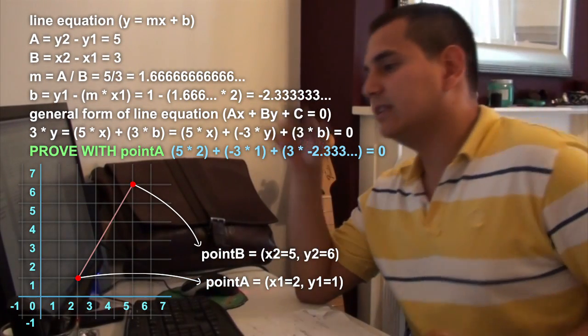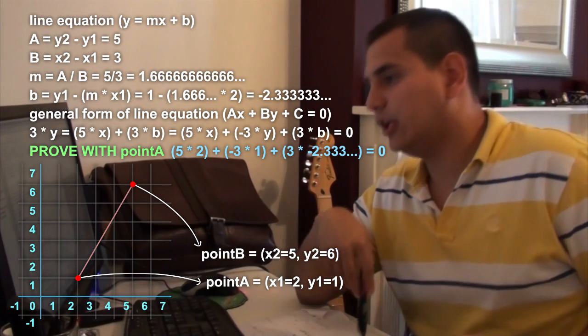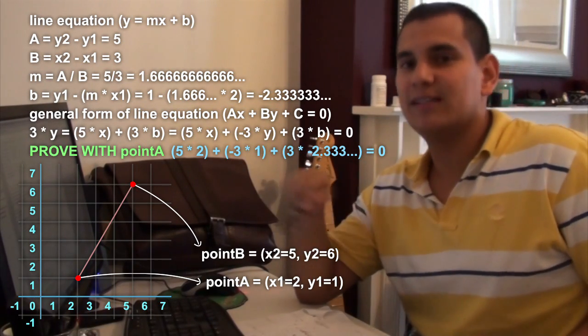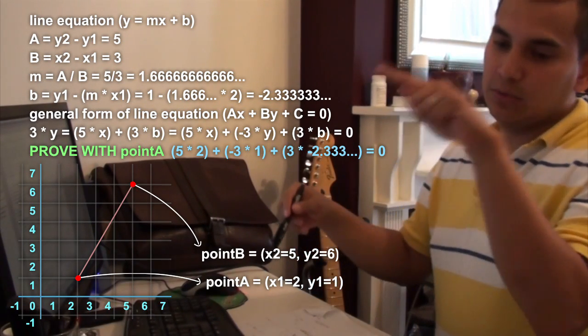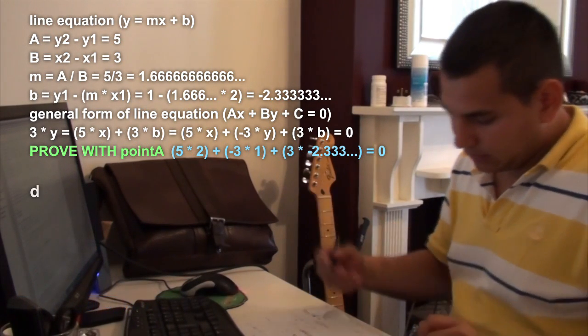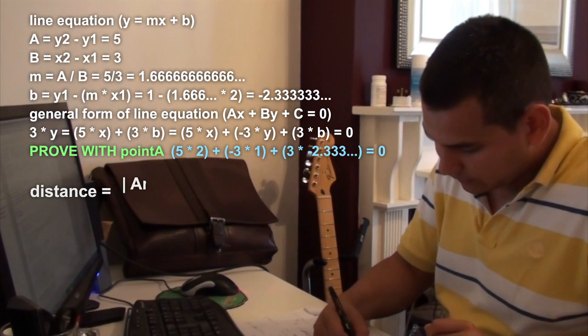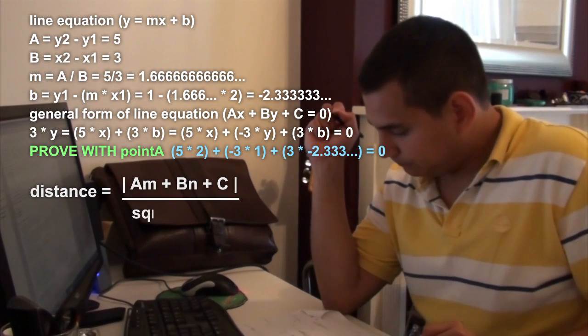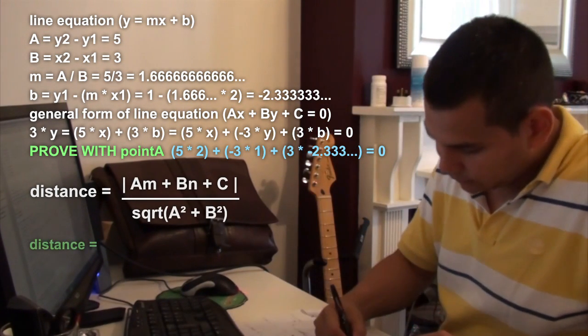So now that we know how this line equation works, we can easily jump to the other equation to find out what is the distance between our line to any point of a parallel line of ours. To do that, the equation you know, this one here, and just put all the variables we have.